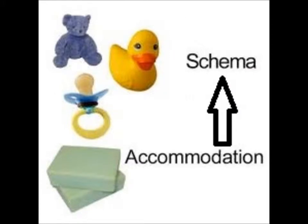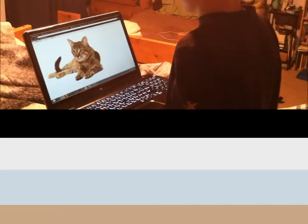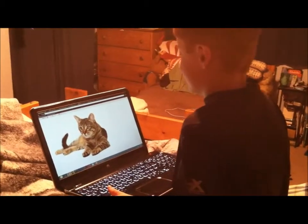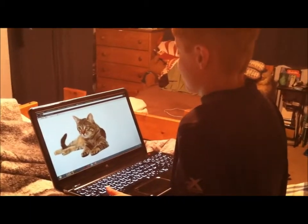Accommodation is the opposite of assimilation. Accommodation occurs when new information changes the schema an individual has developed by broadening the individual's understanding. Henry has demonstrated that he understands the difference between a cat and a dog. This could be explained by accommodation, because seeing these new animals would have changed the schema of furry four-legged creatures.